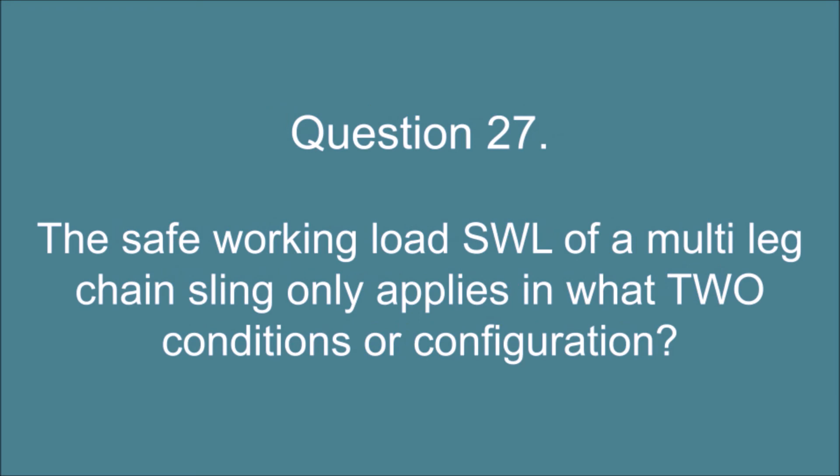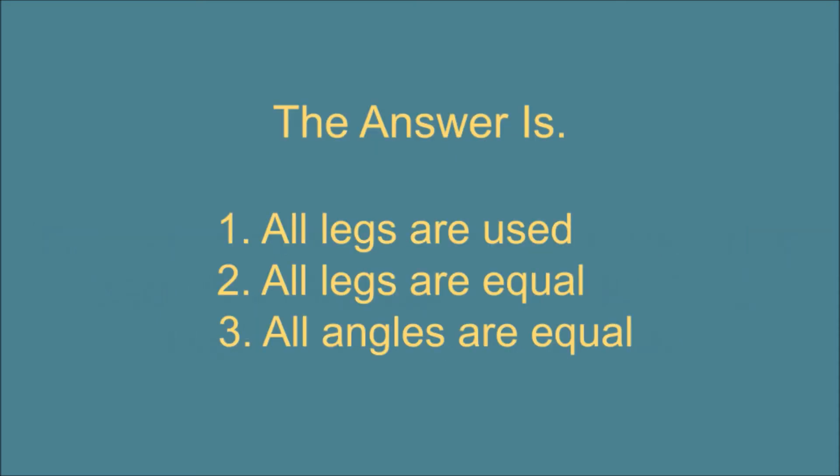Question 27. The safe working load SWL of a multi-leg chain sling only applies in what two conditions or configuration? The answer is: 1. All legs are used. 2. All legs are equal. 3. All angles are equal.